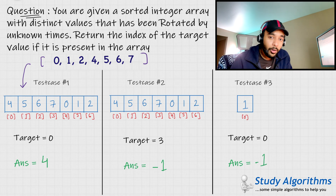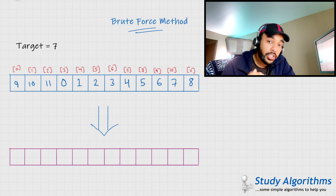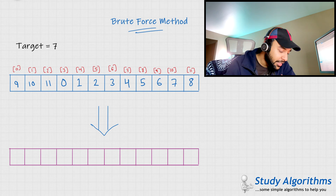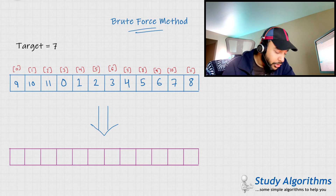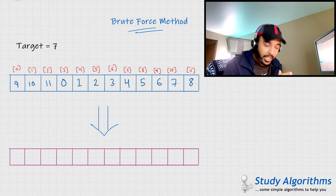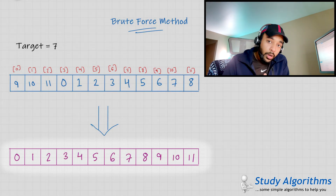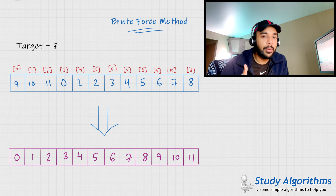If you understand the problem better now, feel free to try out the solution on your own. Otherwise, let us dive into the solution. A good developer always tries to come up with a brute force solution first, because a brute force solution ensures that a solution to the problem exists. So how would the brute force solution to this problem look like? I have this array. This array is sorted, but as you can see, it has been rotated by some number of times. One way to solve this problem would be to simply un-rotate this array. When I un-rotate this array, it becomes a normal sorted array with no rotations. If you have to search for the number 7 in this, you can easily apply the binary search algorithm and come up with an answer. And voila, you just solved the question.